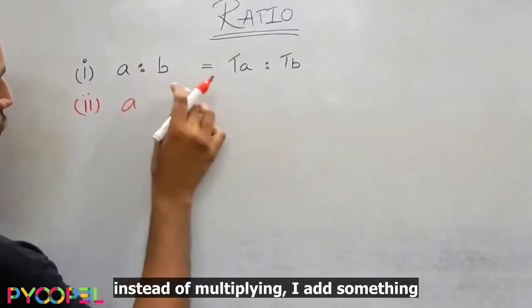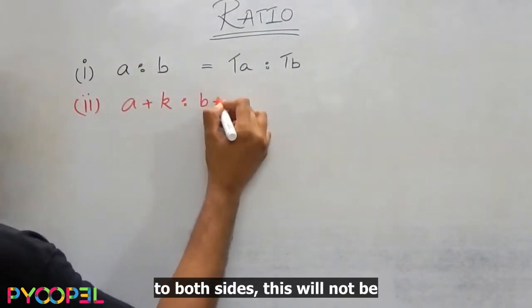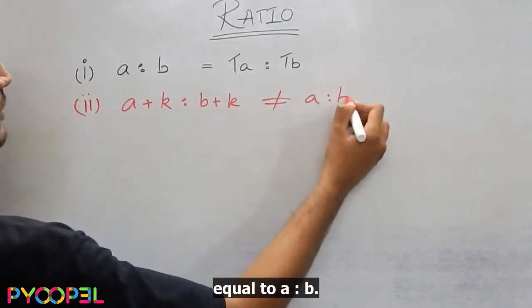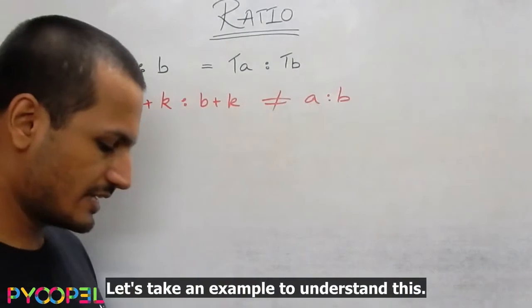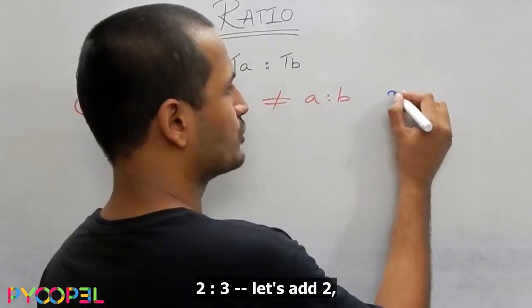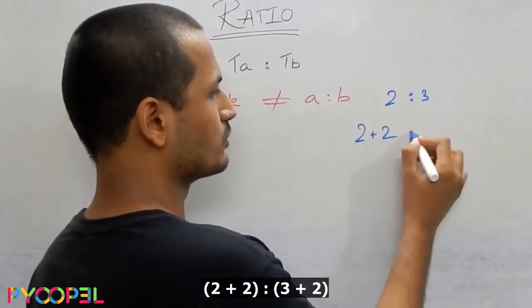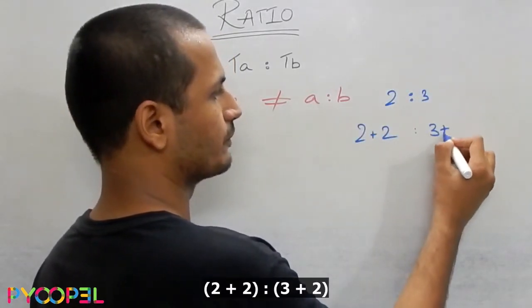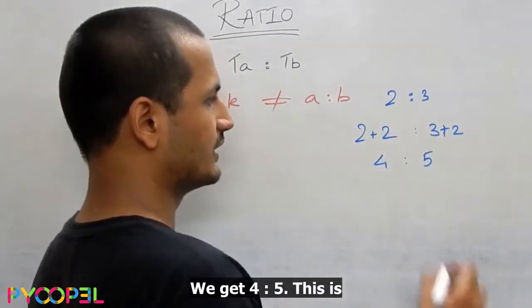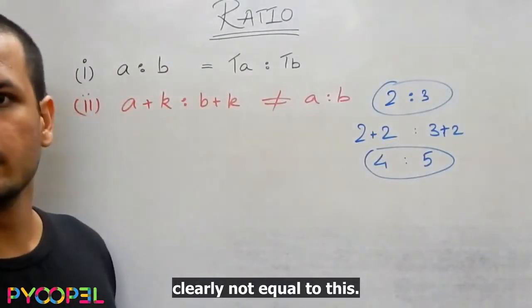But, if I add something to both sides instead of multiplying, this will not be equal to A is to B. Let's take an example to understand this. 2 is to 3. Let's add 2 plus 2 is to 3 plus 2. We get 4 is to 5. This is clearly not equal to this.